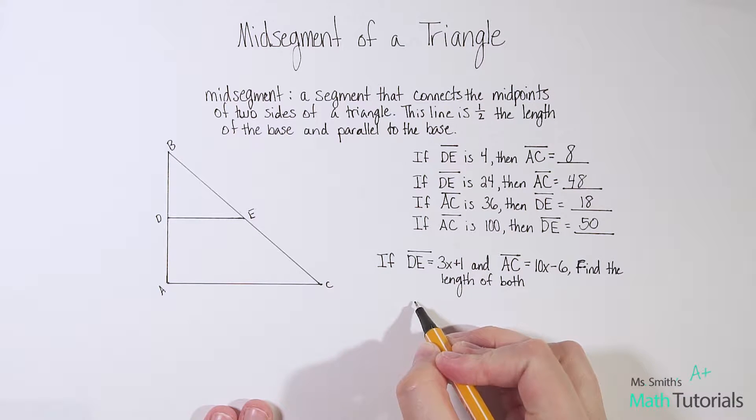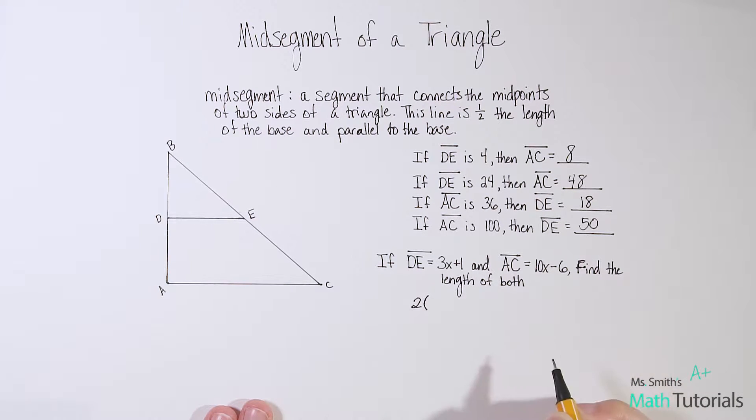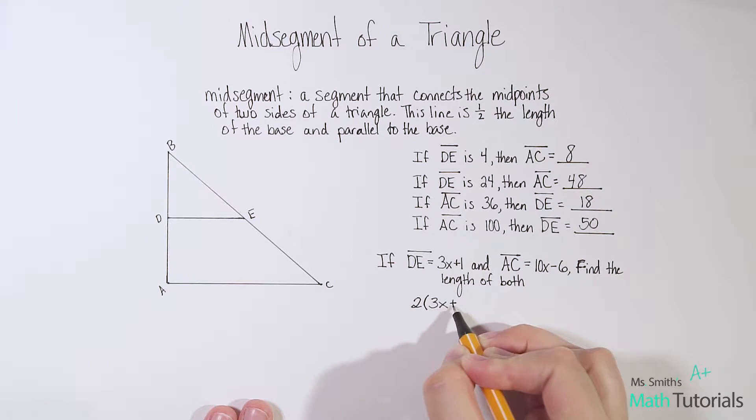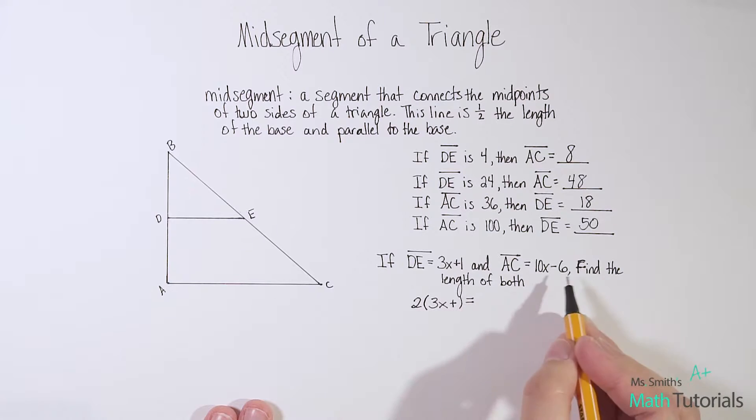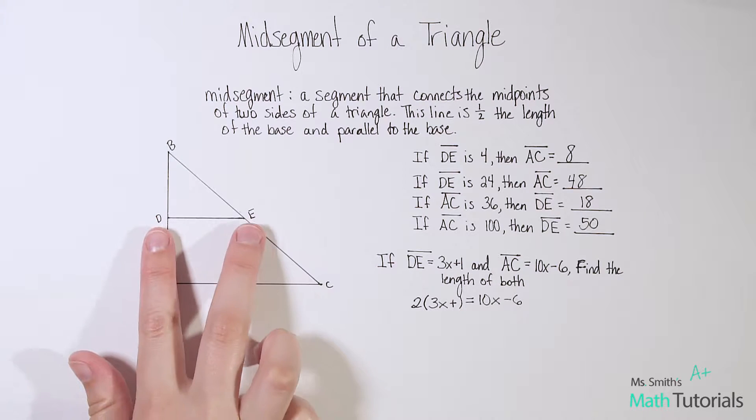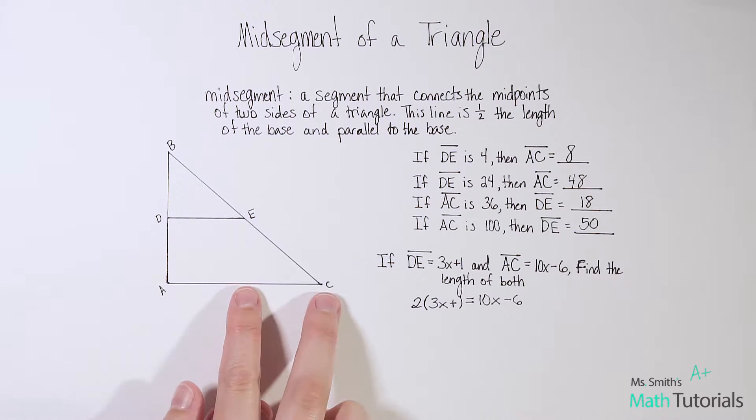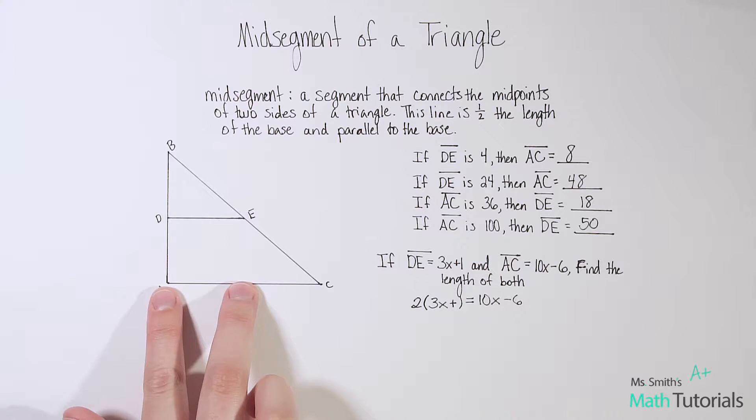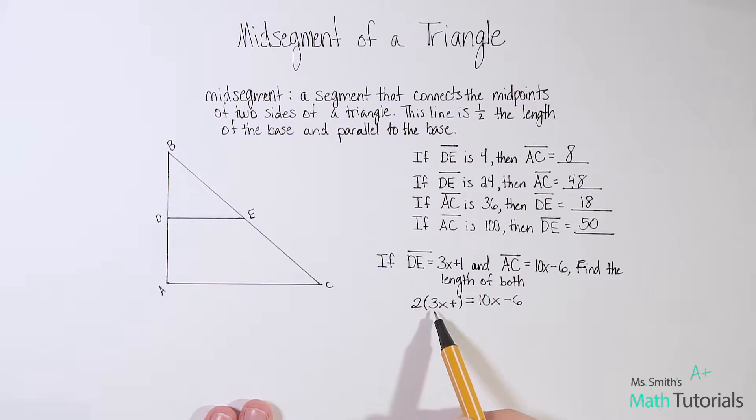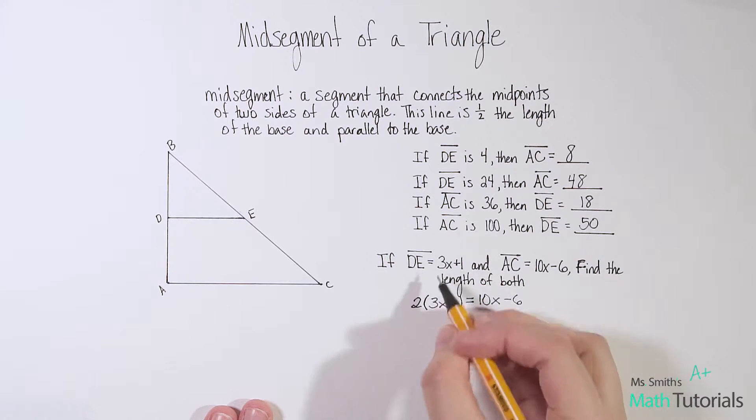So I know that two times the mid-segment, which is 3x plus 1 gives me the base, which I know is 10x minus 6. Now this is how I just always prefer to set it up. I like to take whatever the shorter mid-segment is, multiply it by 2 to give me the base. Other people prefer to take the base, multiply it by 1 half to give them the mid-segment. It doesn't matter. Either way, you should get the same answer. I just like to avoid fractions anytime it's possible to avoid them.